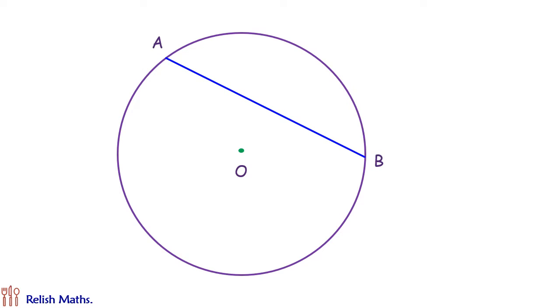AB is a chord and there is a point P on this chord AB such that the length AP is 18 cm and the length PB is 8 cm. The distance of point P from the center O is 9 cm.